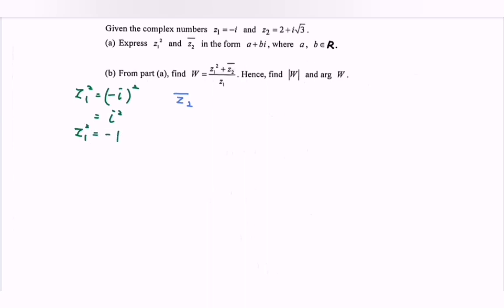Continue, we have the conjugate of z₂. So for this case, we have 2 minus square root of 3 multiplied with i.